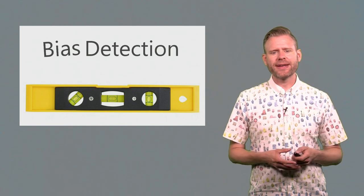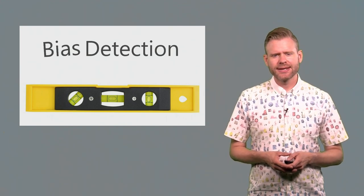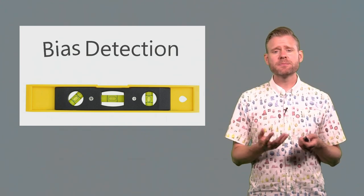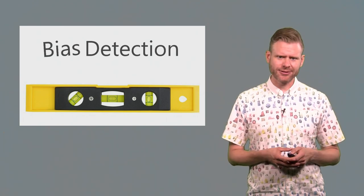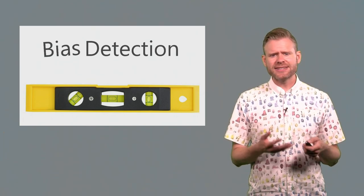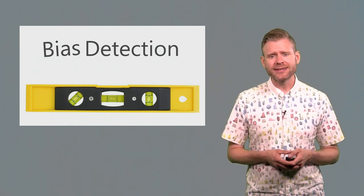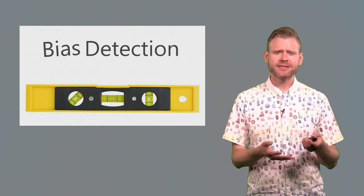As you read and evaluate the scientific literature, it's useful to always keep in mind the possibility that bias is introduced somewhere in the research cycle. And as a consequence, it's good to have some tools at your availability that allow you to detect the presence of bias.